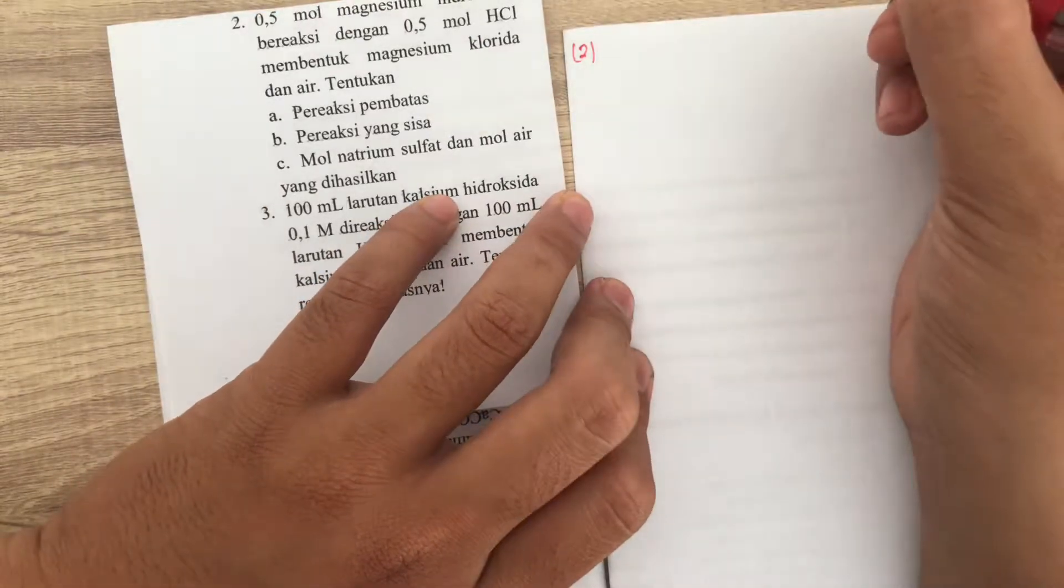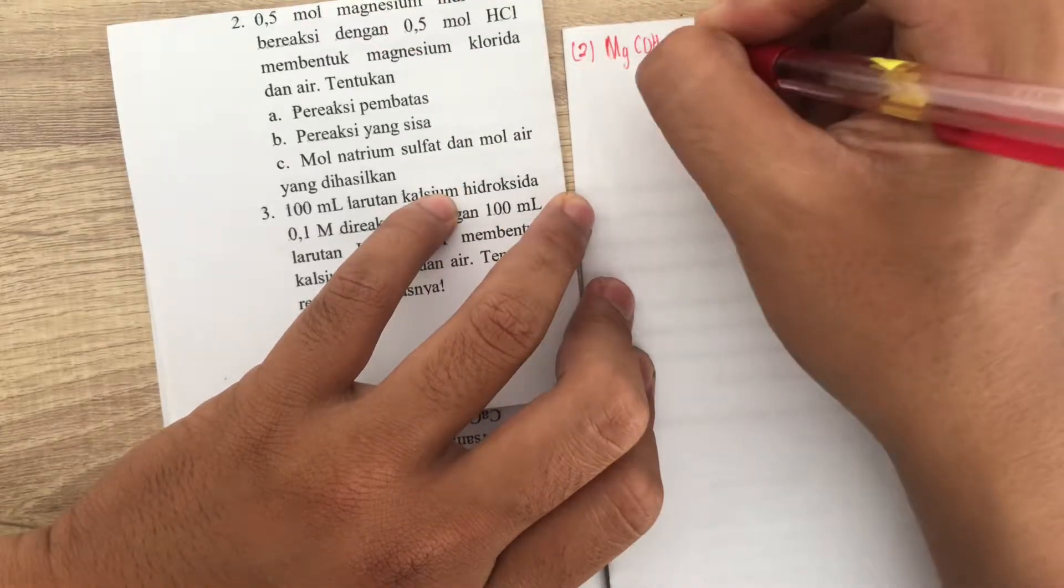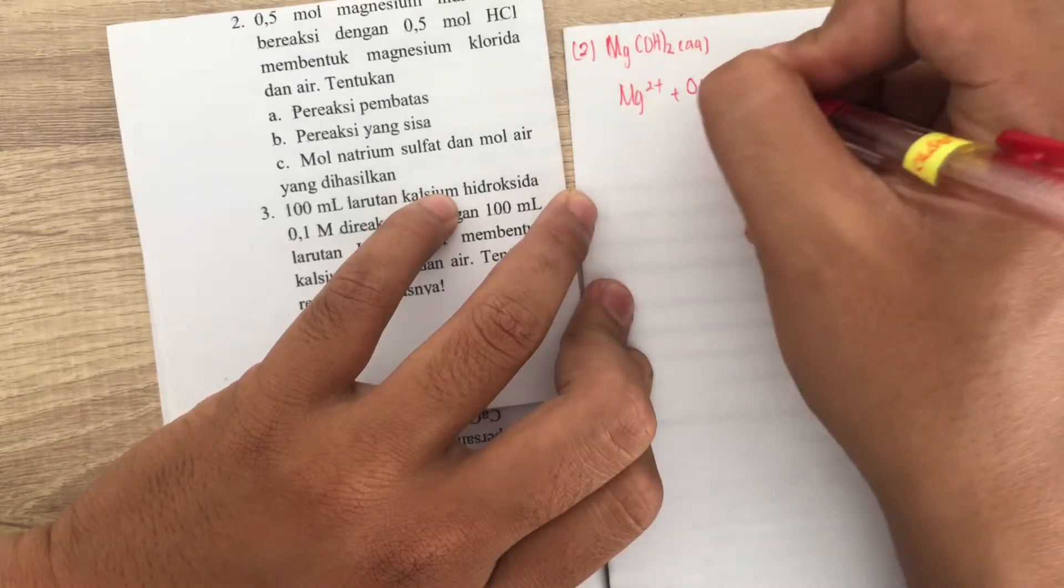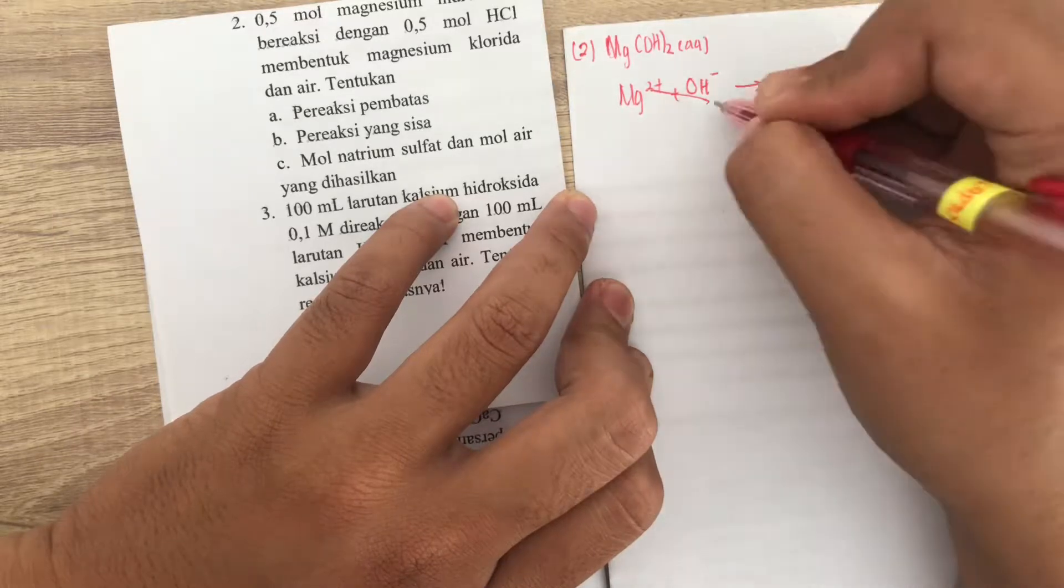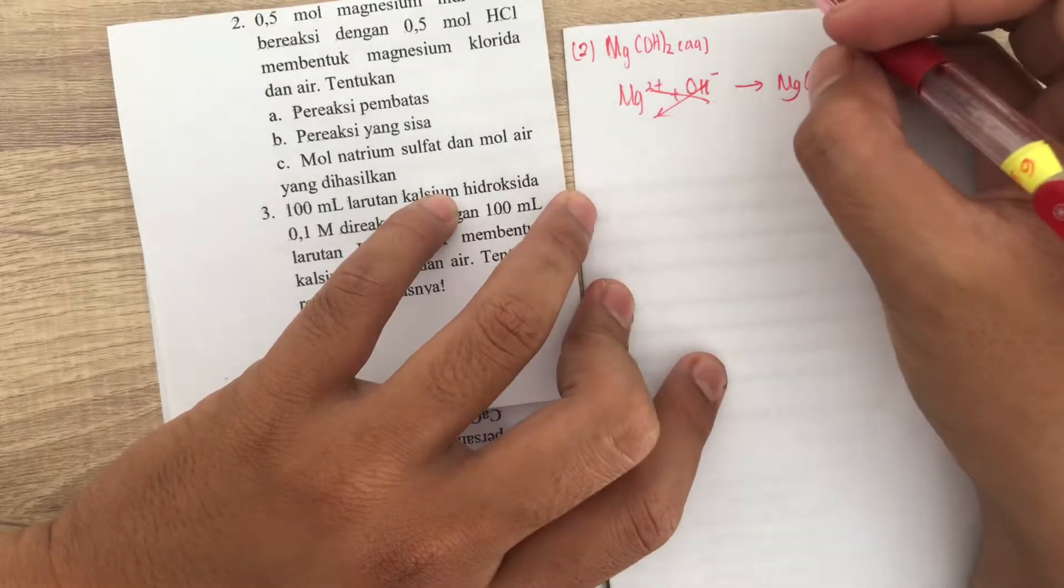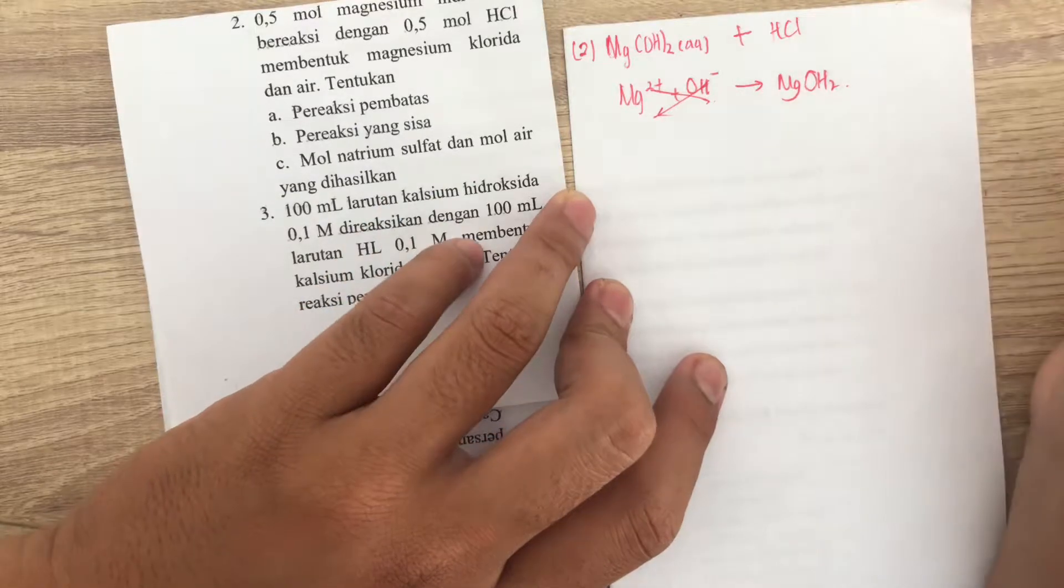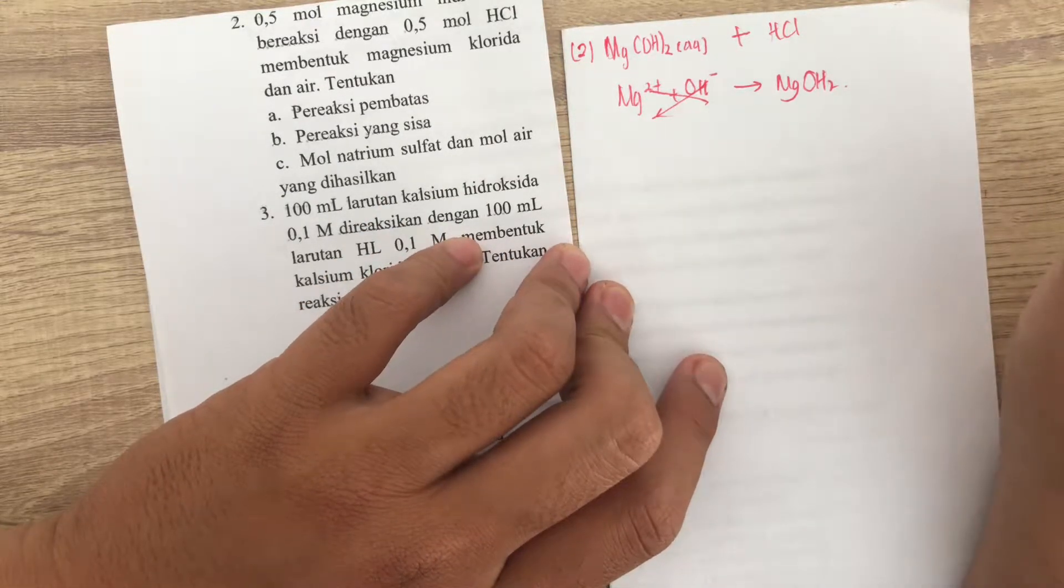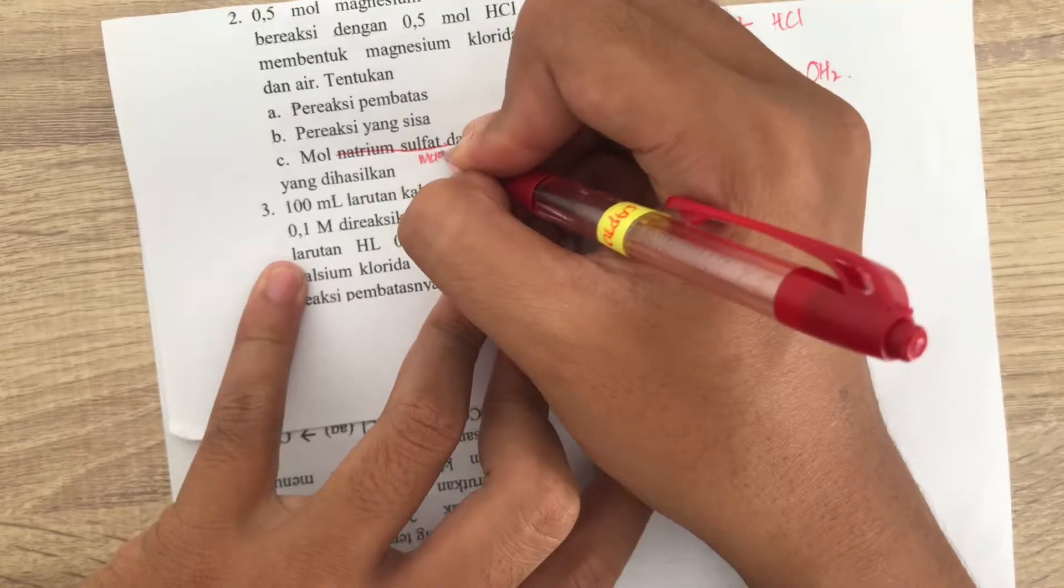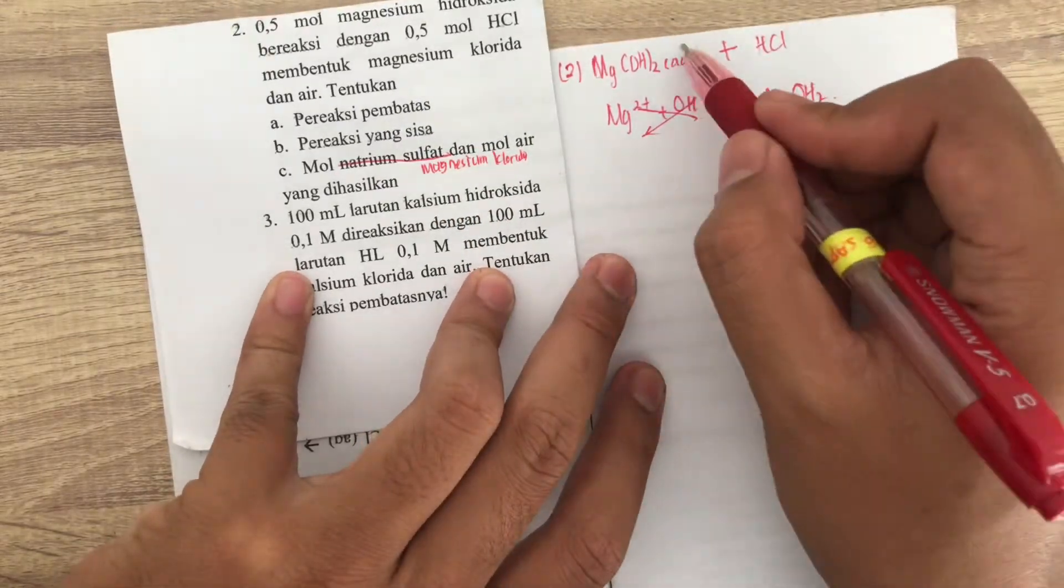Sekarang ke nomor 2. Untuk nomor 2 ini, kita baca soalnya. 0.5 mol magnesium hidroksida. Magnesium hidroksida berarti adalah Mg(OH)2. Kenapa bisa Mg(OH)2? Soalnya dia golongan 2. Berarti dia adalah Mg2 plus ditambah dengan OH minus. Berarti jadinya adalah tukeran kan. Mg. Ini 1, berarti Mg(OH)2. Plus minusnya nggak usah diikuti. Terus dia bereaksi dengan 0.5 mol HCl. HCl kan berarti yaudah HCl. Tentukan pereaksi pembatas. Pereaksi yang sisa. Mol natrium sulfat. Oh, ini bukan natrium sulfat berarti ya. Nanti ini bukan natrium sulfat. Ini adalah magnesium klorida.